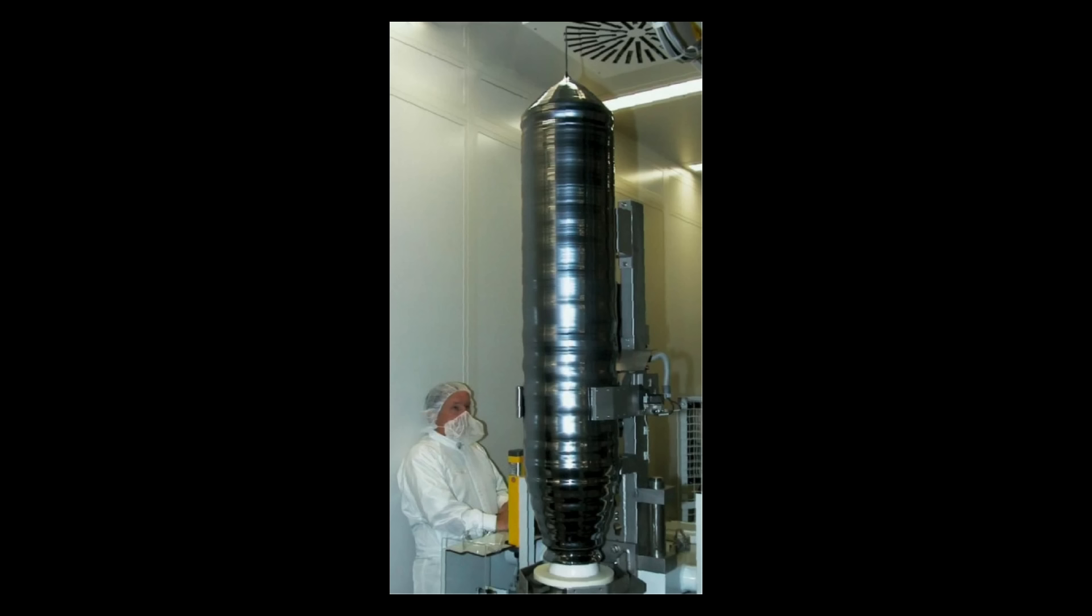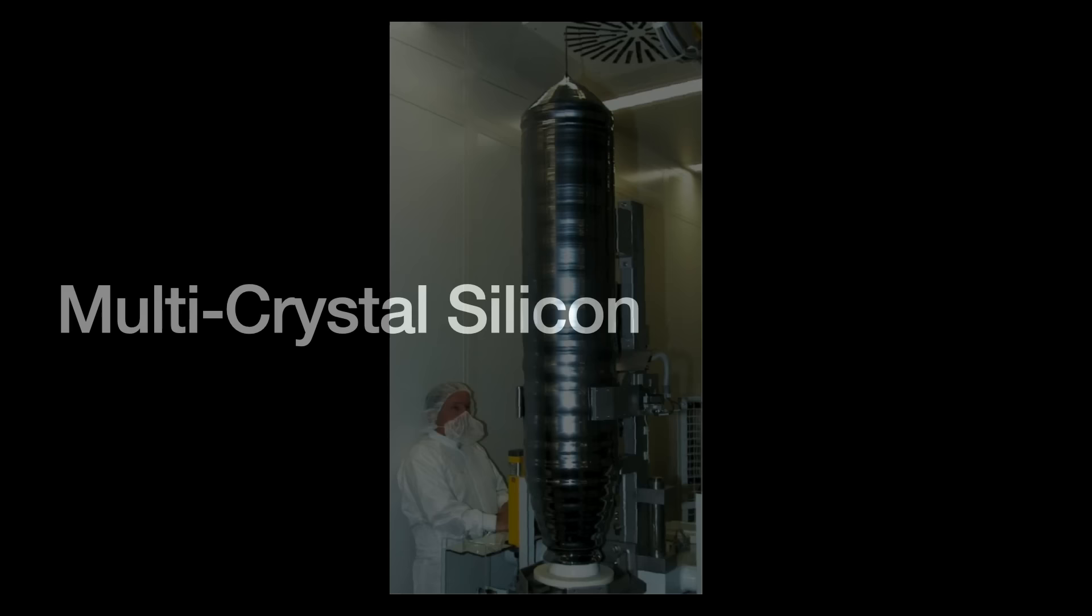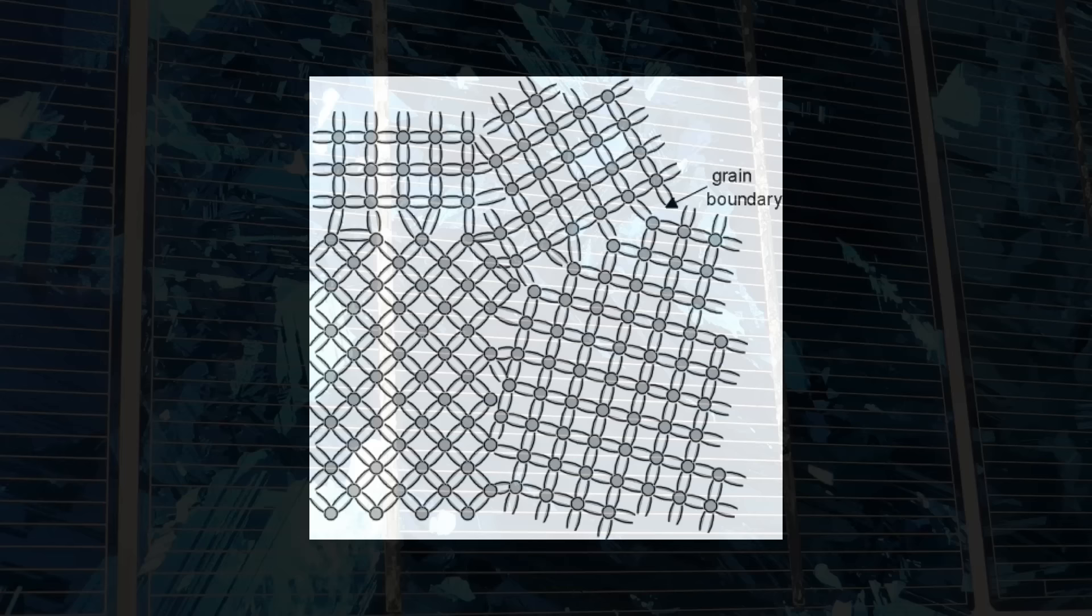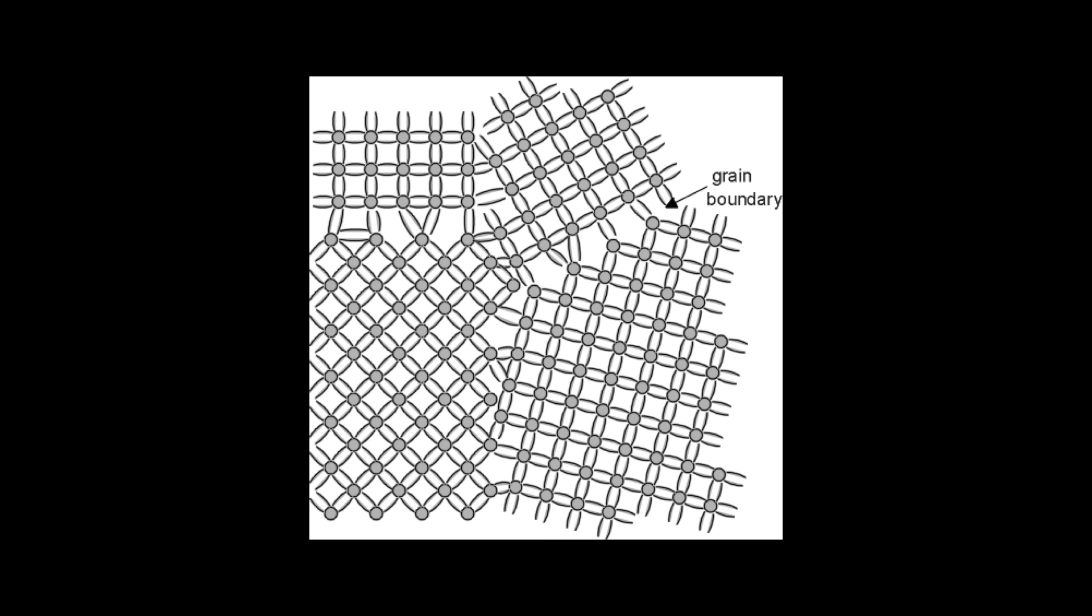Multicrystals are not as neatly organized as their single crystal cousins. They are referred to as multi because they are made up of many grains. The dislocations in the resulting atomic bonds are referred to as grain boundaries. This interesting structure gives them this distinct flaky look which I think is kind of cool.